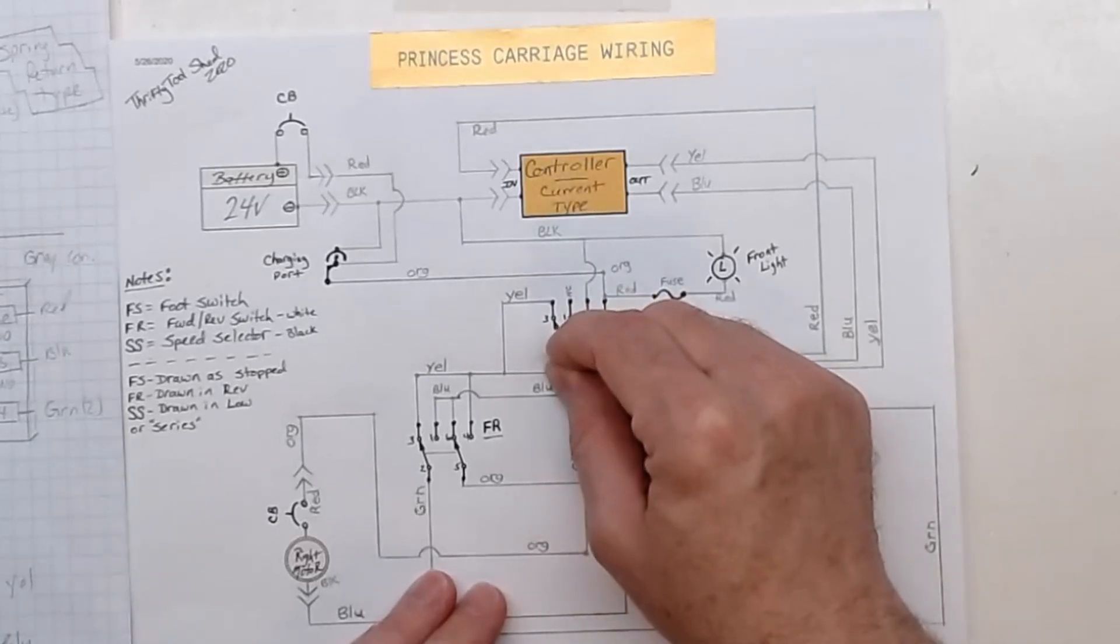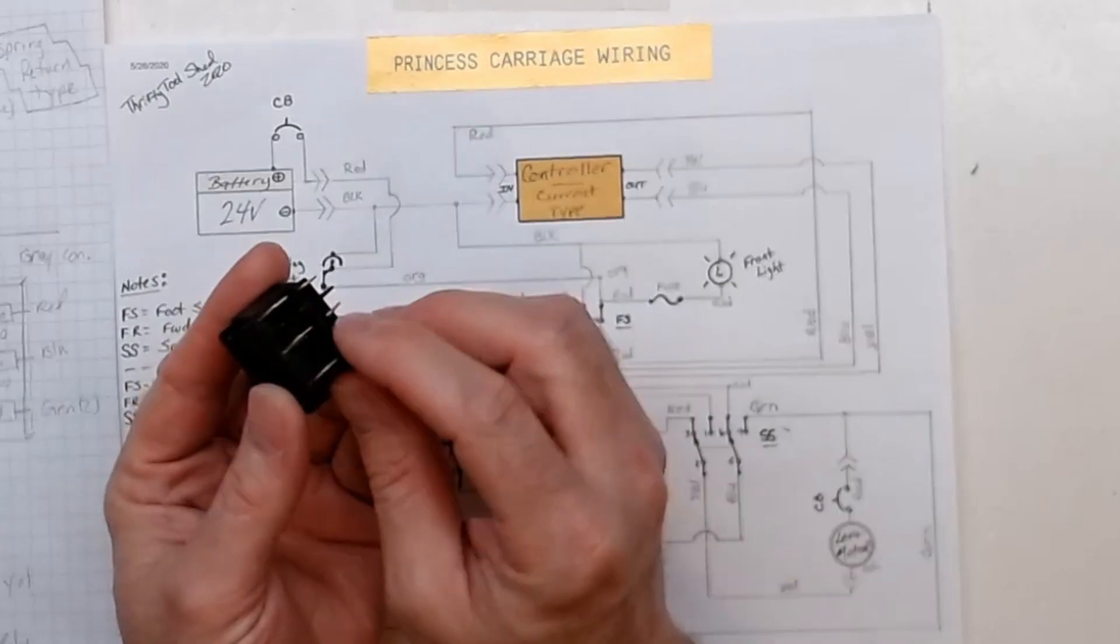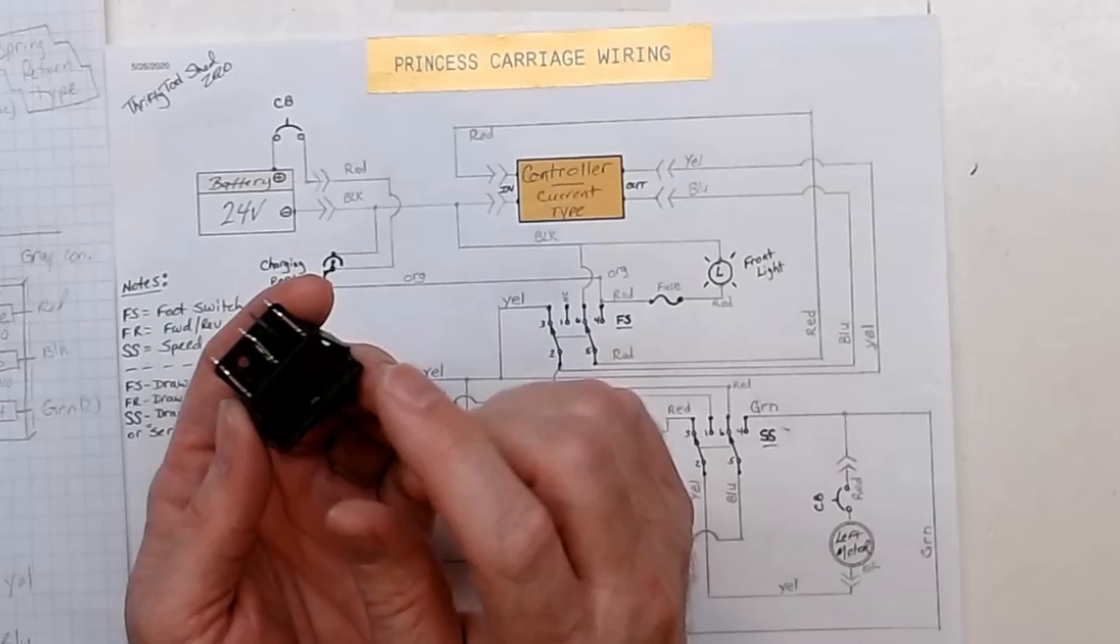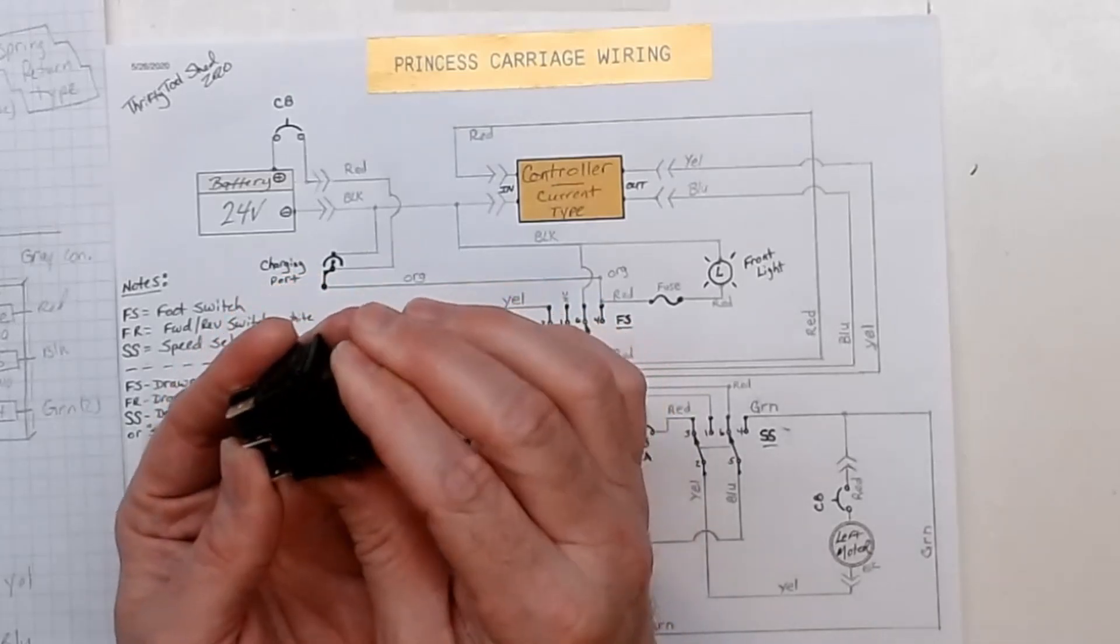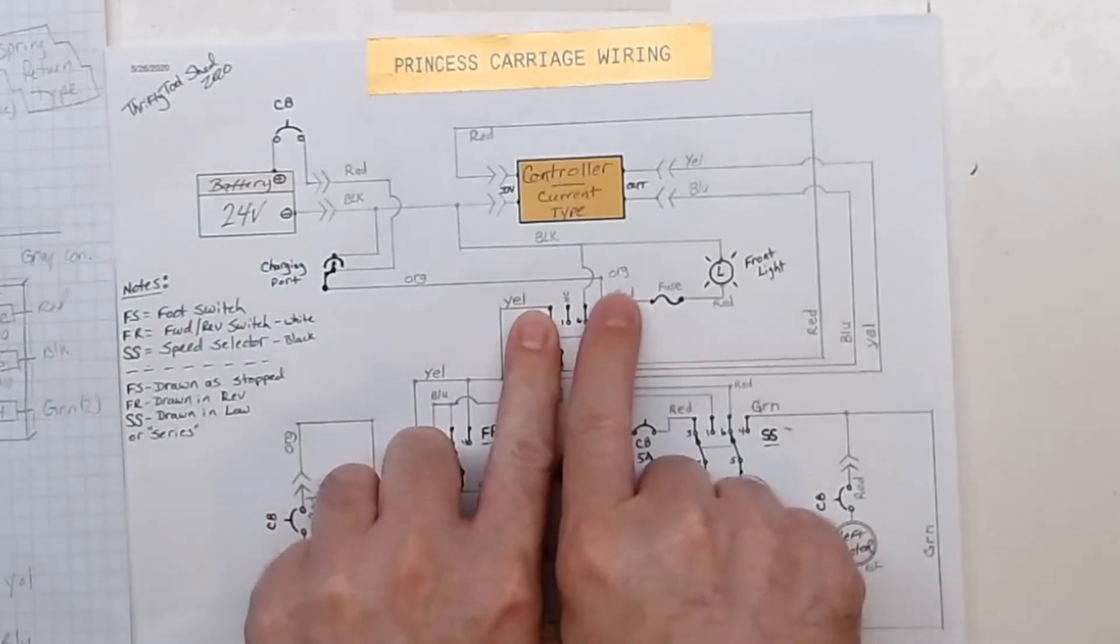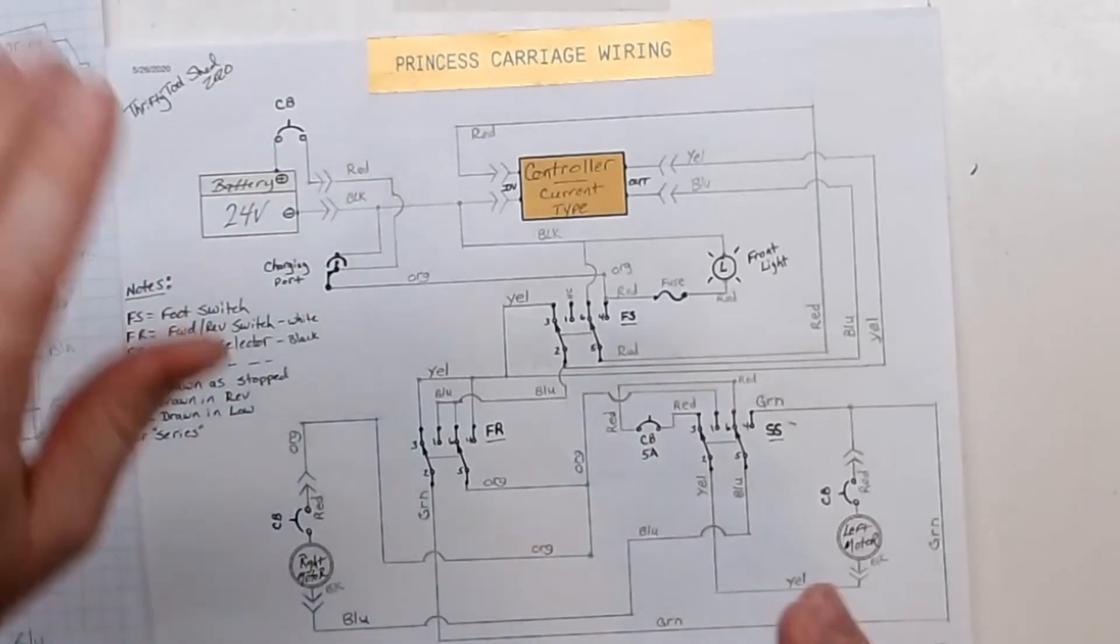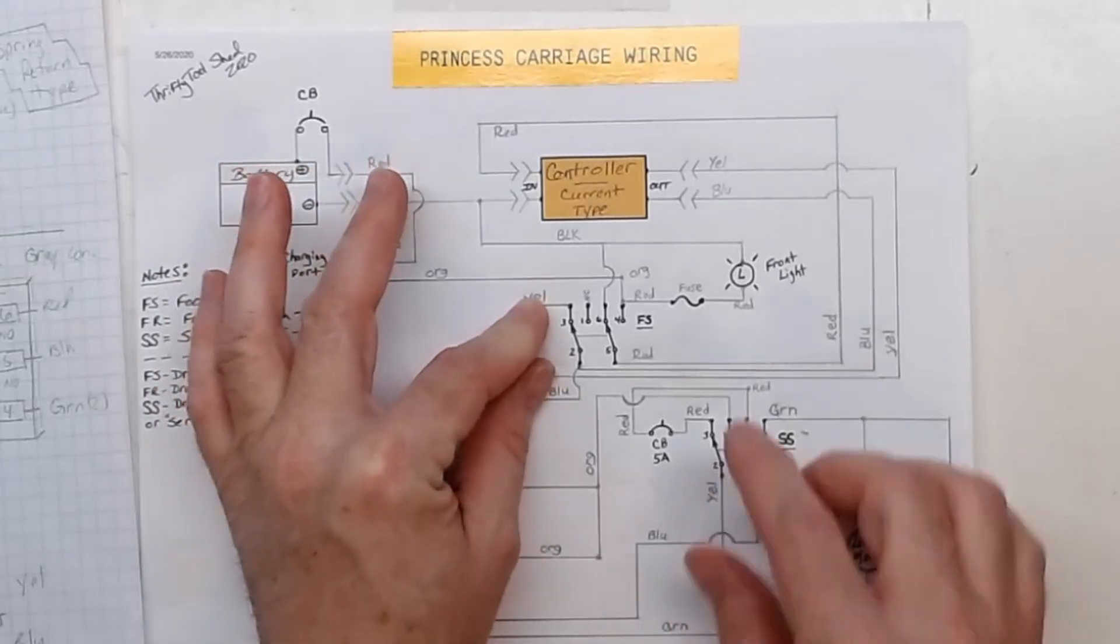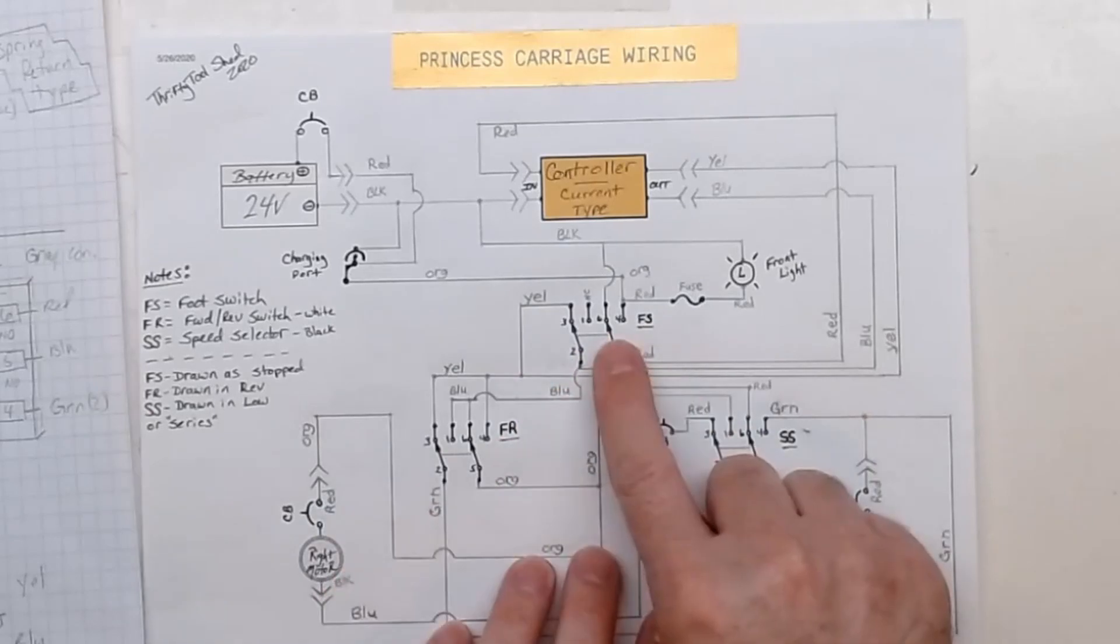When we release the foot switch we're going from red to black, shorting across the input of the controller. The yellow and blue get shorted and it brakes the motors. I believe this one failed because it overheated - the controller probably shorted and caused issues with the foot switch.